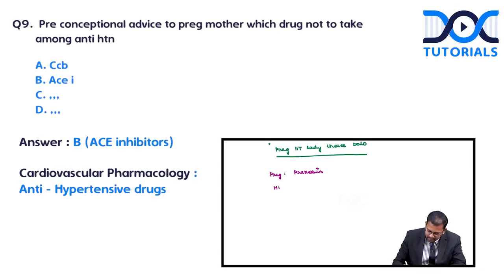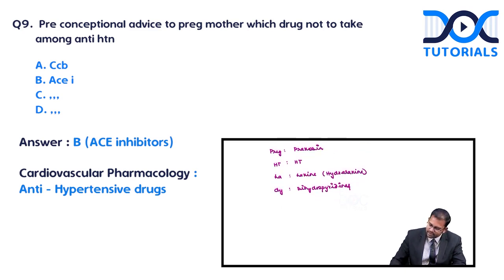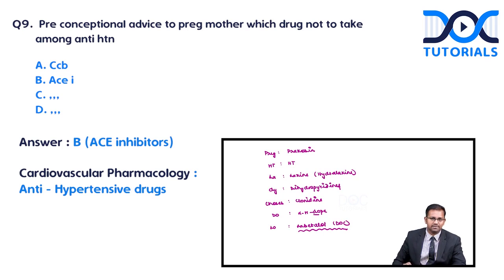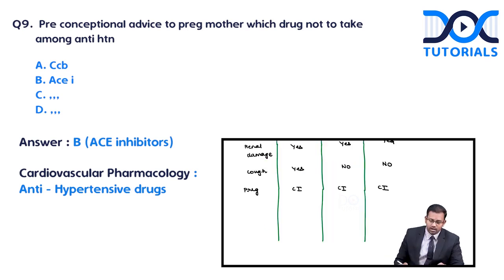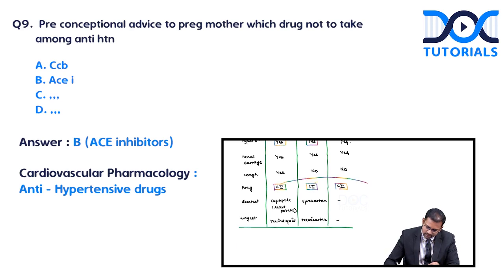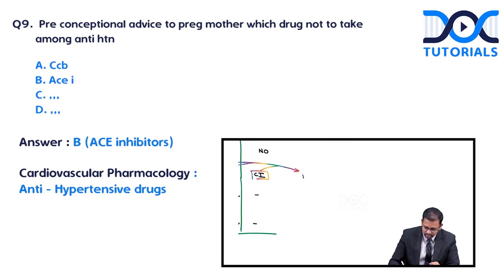The mnemonic 'LA DI JU DOLO' is for remembering antihypertensives. LA is for hydralazine, DI or DY is for dihydropyridines (the '-dipines'), JU is for clonidine, DO is for dopamine/alpha-methyldopa. LO is for labetalol, which is currently the drug of choice for pregnancy-induced hypertension, replacing alpha-methyldopa. Labetalol 100 mg can be administered.